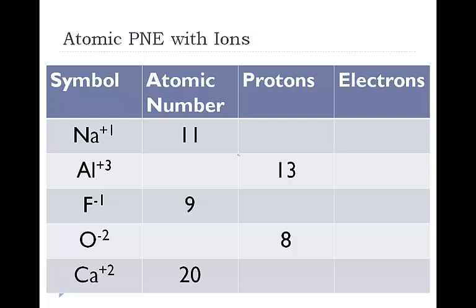So, let's practice some atomic problems with ions. Again, this is going to stay the same. The atomic number and the number of protons are always going to be equal. So, eleven, thirteen, nine, eight, twenty. If sodium has a positive one charge, eleven minus what number gives us a positive one? This has to be ten. So, thirteen, positive charge. So, thirteen minus the number of electrons gives us a positive three charge. Again, this has to be ten.